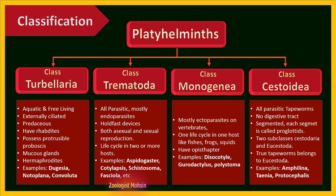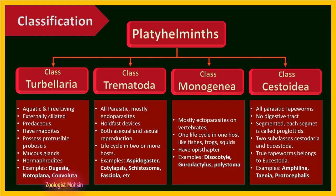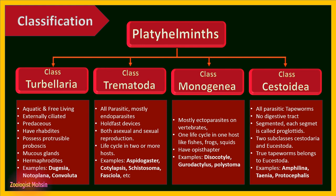Class Cestoidea: all are parasitic tapeworms with no digestive tract. The body is segmented and each segment is termed a proglottid. There are two subclasses: Cestoidea and Eucestoda. True tapeworms belong to Eucestoda. Examples include Amphilina, Taenia, and Proteocephalus.